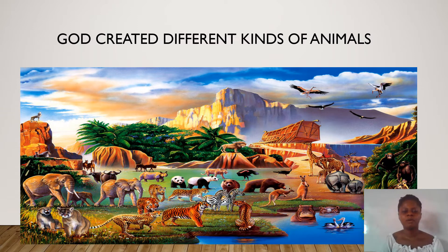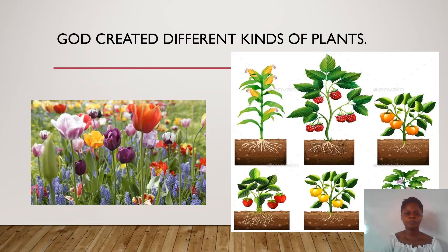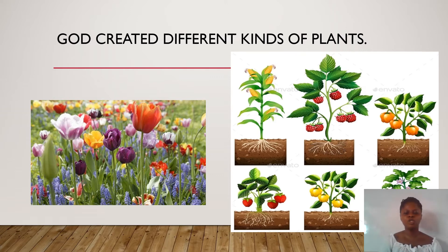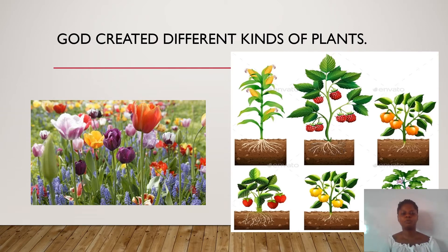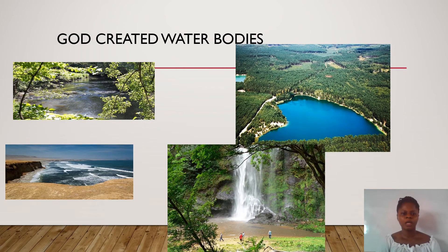They are all the creation of God. God also created different kinds of plants — tall plants, short plants, huge plants, small plants, crawling plants, and creeping plants. God created them all.